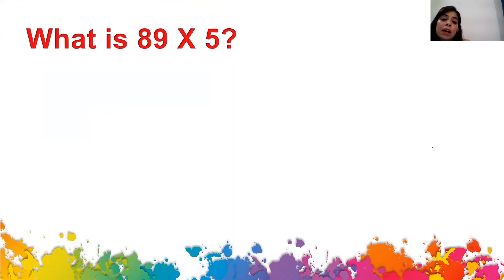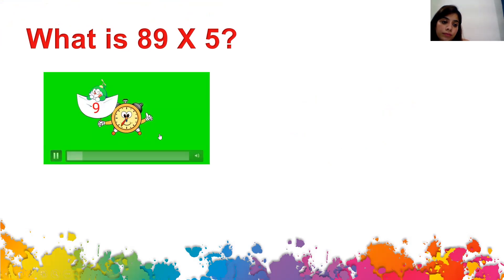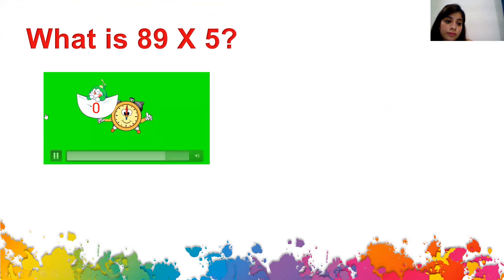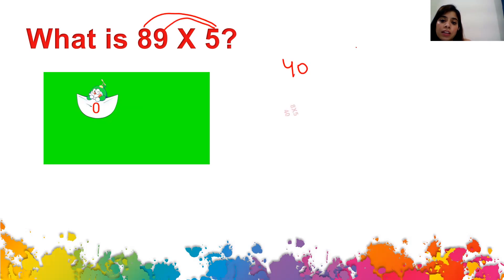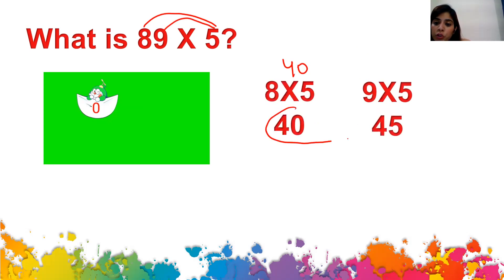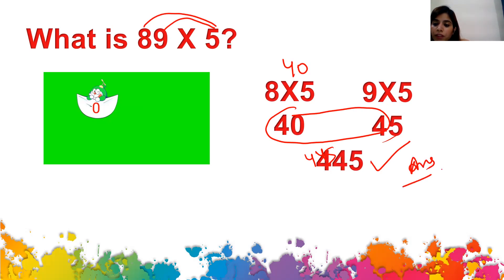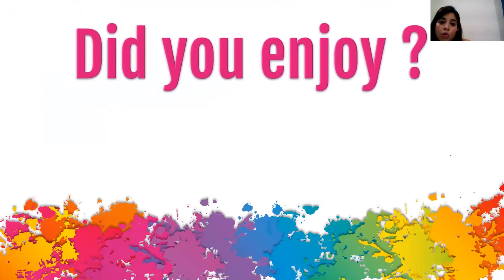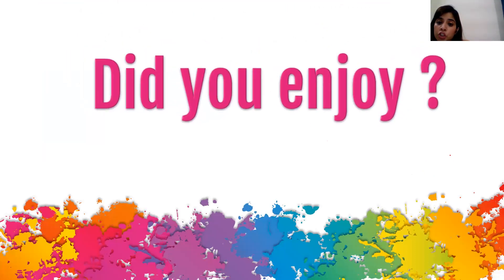Next: what is 89 multiplied by 5? You have 10 seconds. 8 times 5 is 40, 9 times 5 is 45. Combine 40 and 4 which is 44, then write 5 as it is — the answer is 445.